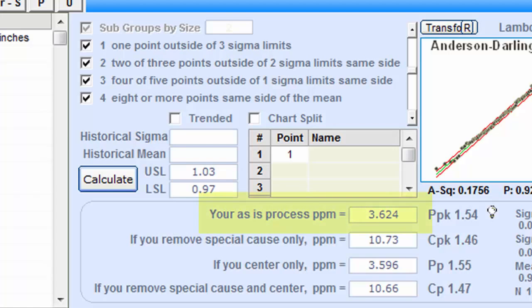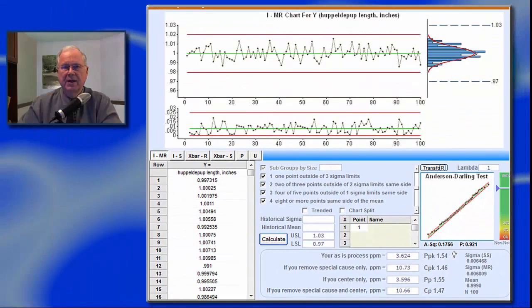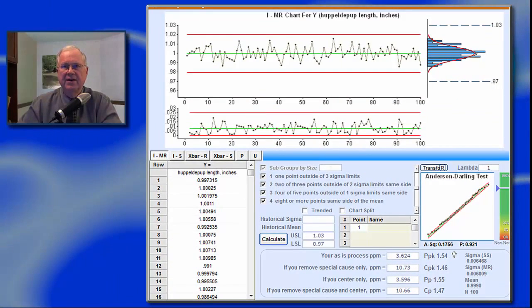For simplicity, let's just look at the parts per million defective for the as-is process. Of course, you can't possibly predict defects down into the single digit parts per million with 100 samples. Not even close. But still, this is very encouraging. As far as we can tell, this is a six sigma process and one that we can depend on. Either the defective parts per million or PPK would make an excellent key process indicator or KPI.